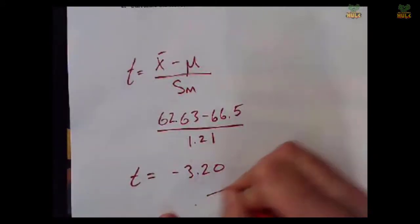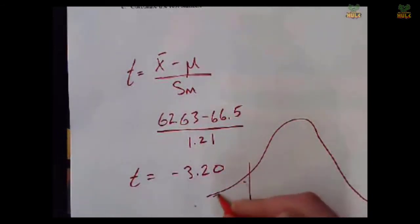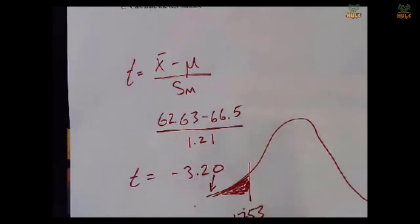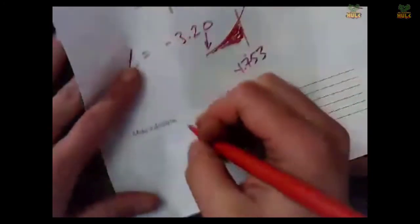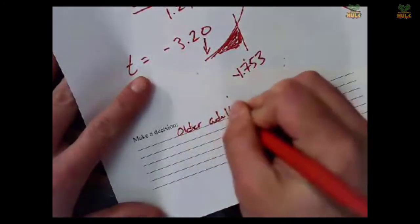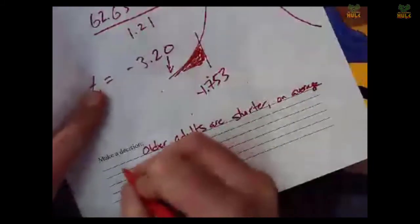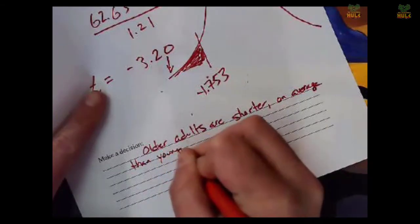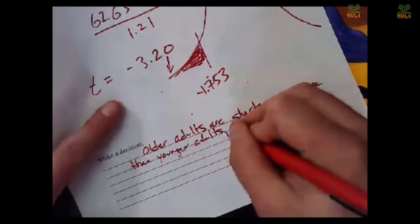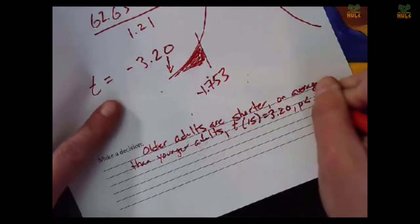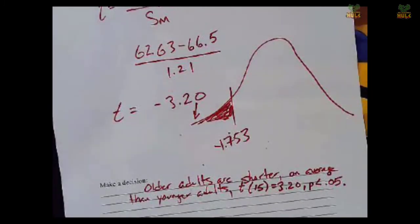So take a look at your distribution again. We said this whole area here is our cutoff, and it was cut off by negative 1.753, which means 3.20 is definitely in this shaded region, which means we can reject the null hypothesis, and we can say that indeed older adults are shorter on average than younger adults, t(15) = 3.20, p less than 0.05. All right, see, that's the single sample t-test. Easy peasy.